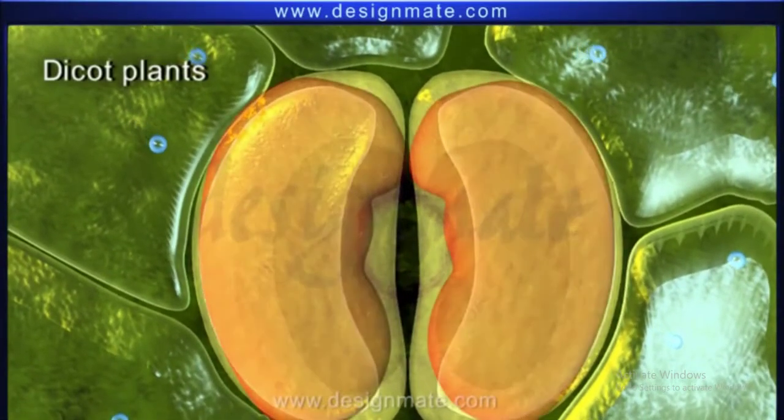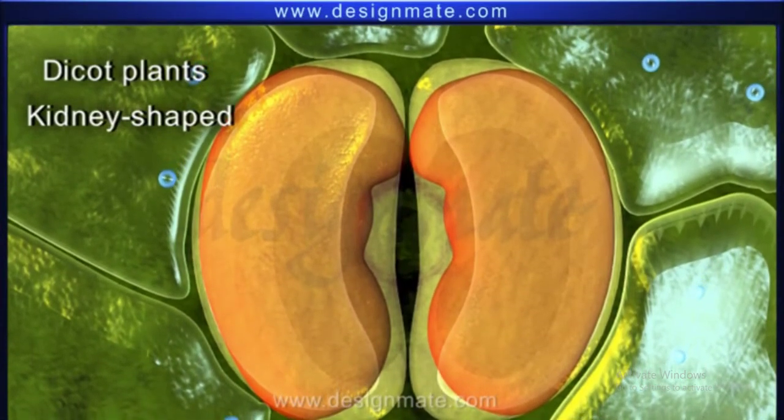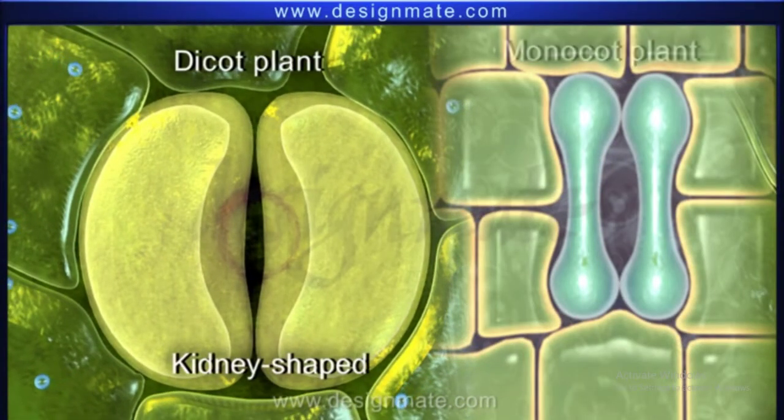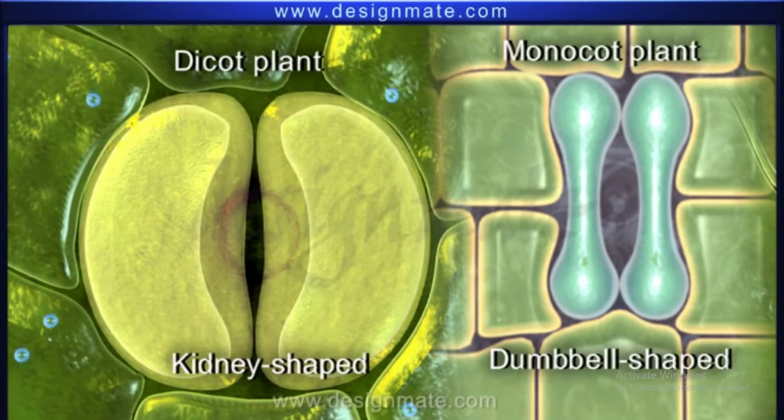The guard cells in dicot plants are kidney shaped, whereas in monocot plants, guard cells are dumbbell shaped.